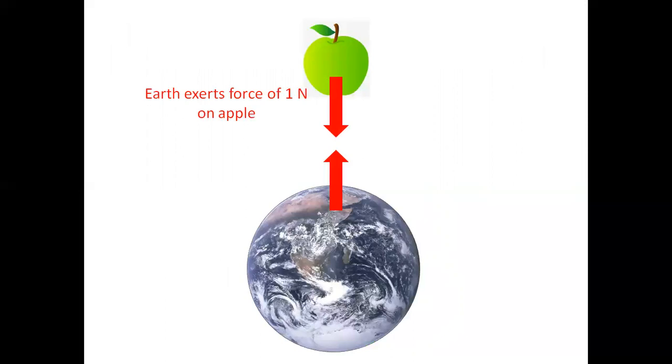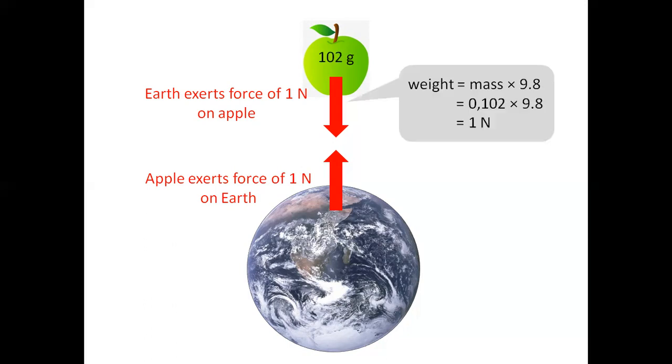The earth exerts a force of one newton on the apple. At the same time, the apple exerts a force of one newton on the earth. The mass of the apple is 102 grams. To calculate the apple's weight, we take the mass, and the mass needs to be in kilograms, so divide the grams by a thousand to get the mass in kilograms, 0.102. Multiplied by 9.8 gives us the weight of the apple, one newton.